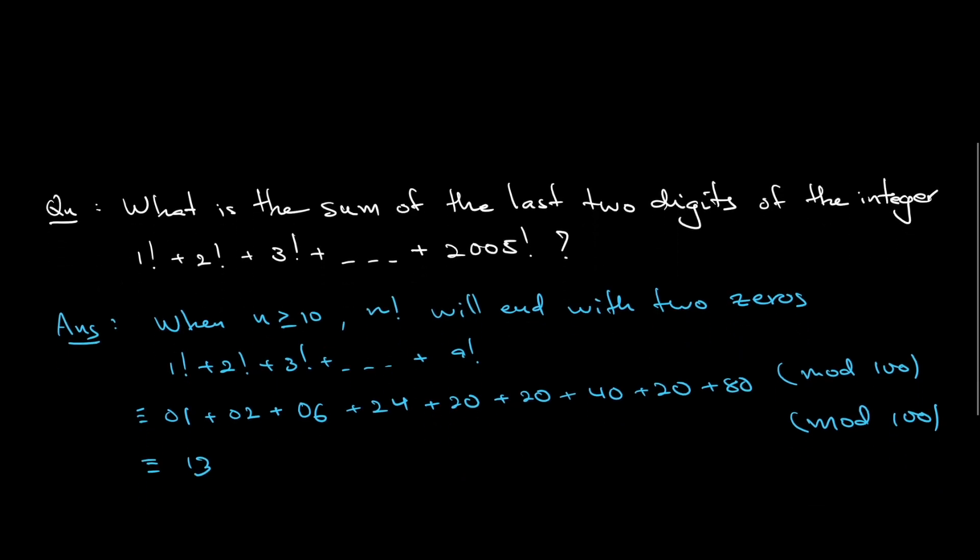This means that the last two digits of the integer 1 factorial plus all the way until 2005 factorial are 13. So to answer the question, the question asks for the sum of the last two digits.